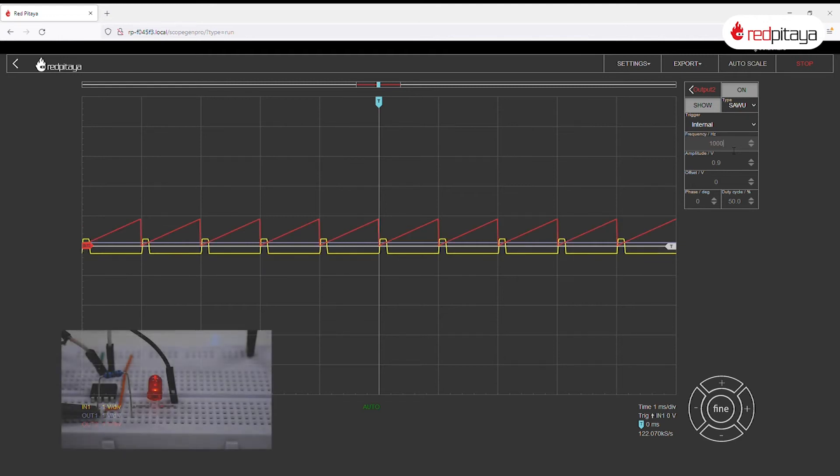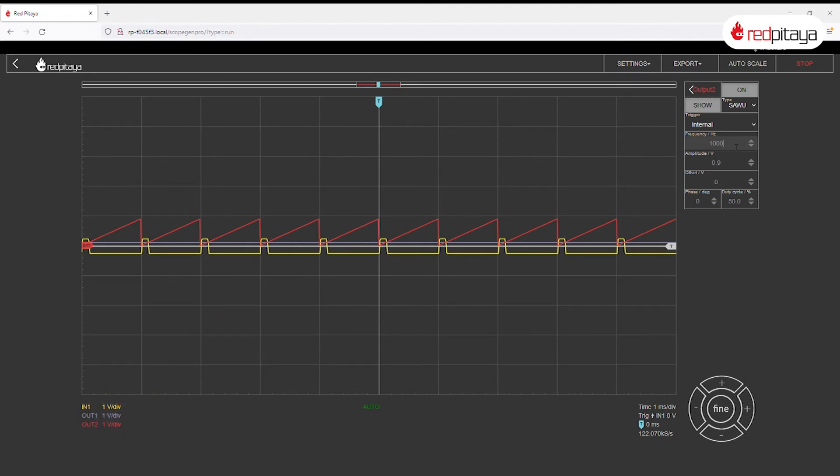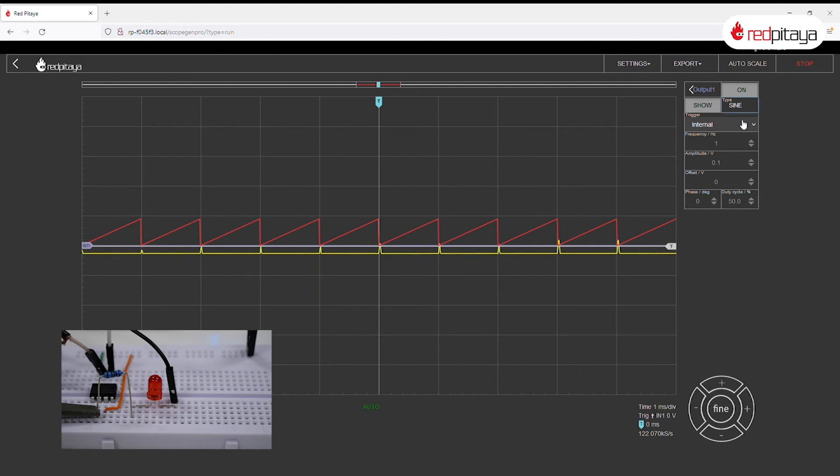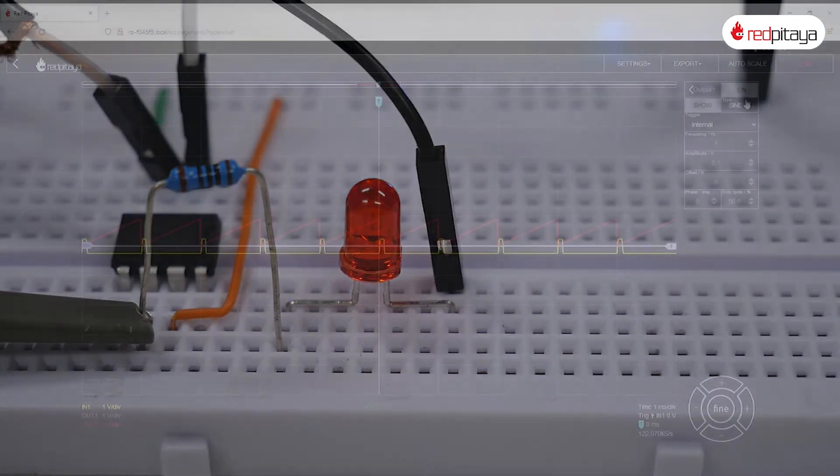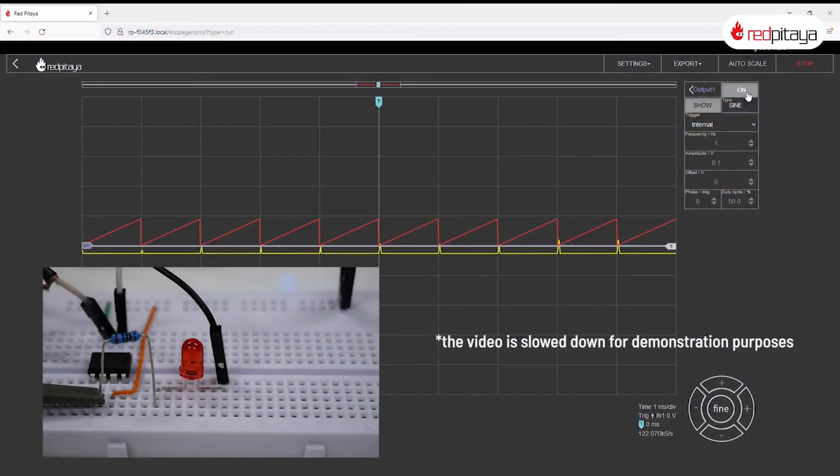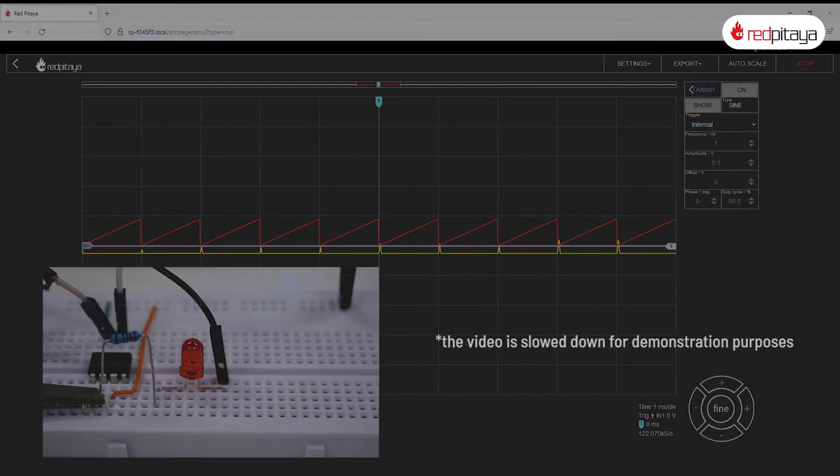If we set the modulation frequency to something high like 1000 Hz, we can even feed something other than a DC voltage as a reference signal. How about a sine wave at 1 Hz? Duty cycle is clearly varying with time. And LED is now breathing. Analog PWM modulation the old fashioned way.